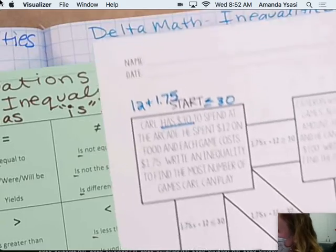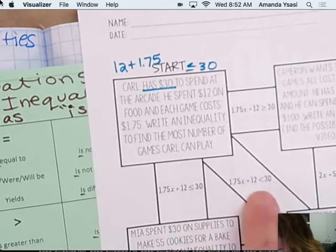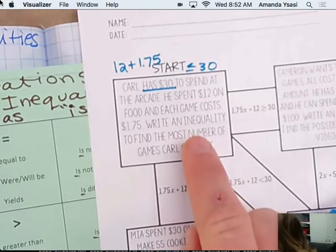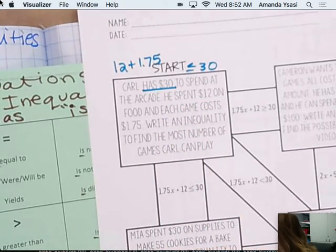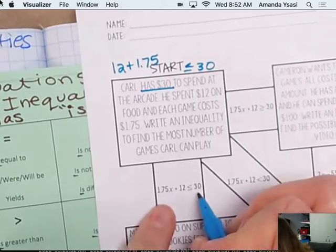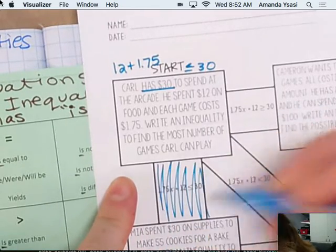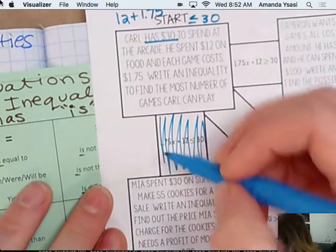So if we look at our choices, we have one, two, three choices here. Can he spend all $30? Yes. So it has to be the or equal to. So less than or equal to. So shade this. So it goes down to this one.